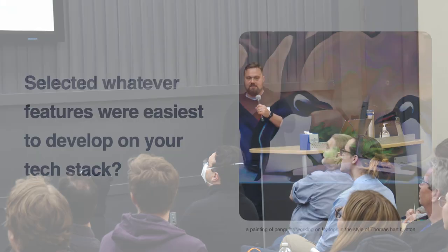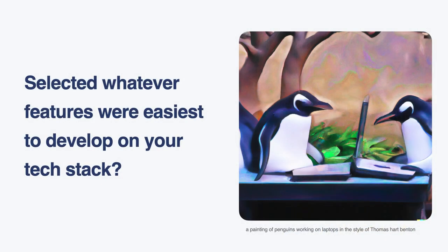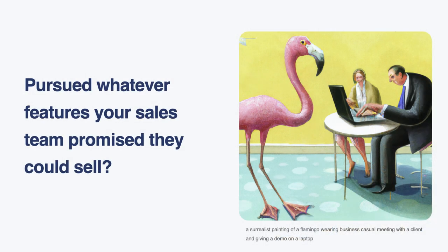Or how about you just select whatever feature is the easiest and quickest to market? It doesn't matter if people want it — it just matters that we can build this and ship it in a week. Or how about when your product roadmap is determined by your sales team?